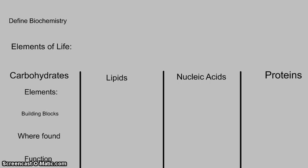As we go through this quick presentation, some good things to add to your notebook: you should have a good definition of biochemistry in your own words, and you should know the elements of living things — those six elements we just mentioned. Now we're going to talk about the four macromolecules: carbohydrates, lipids, nucleic acids, and proteins. For each of them, you should know the elements that make them up, their building blocks, where they can be found, and what function they hold for living things.